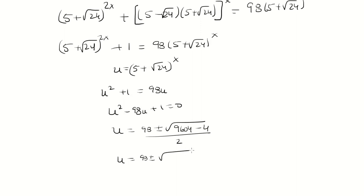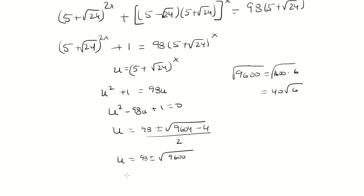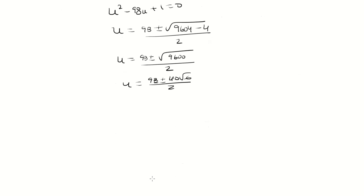That's going to be 9600 under the square root. You can think of 9600 as 1600 times 6. Taking the square root, the square root of 1600 is 40, and inside we're left with the square root of 6. So this will be 98 plus or minus 40 root 6, over 2. Simplifying by dividing by 2, that's 49 plus or minus 20 times the square root of 6.